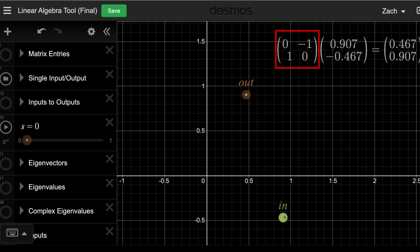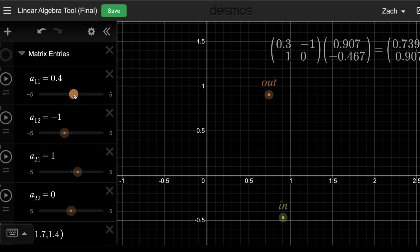This here is just the rotation matrix, which is why you see the output is always 90 degrees away from the input. If you'd like to change the numbers in this matrix, you can just go to matrix entries, open the folder, then you can drag all the numbers around and watch the output shift with them.